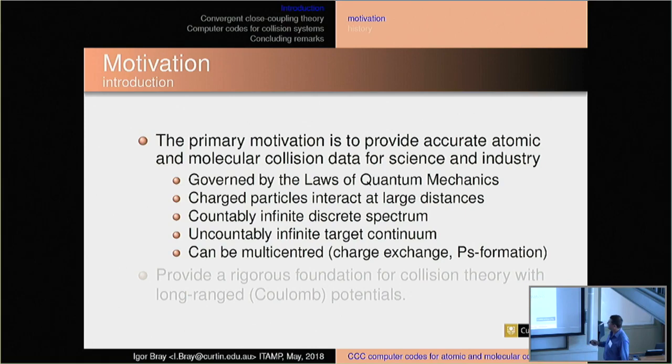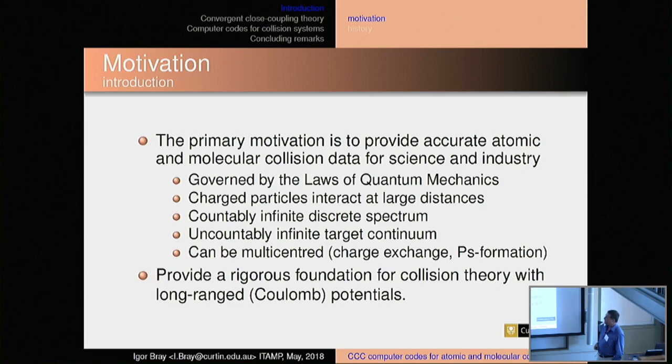It was very clear to me in the 1980s that what we need is to develop a systematic approach to convergence studies in increasing the number of states. It can be a multi-centred charge exchange, positronium formation. We went into heavy particle proton scattering because we solved the positronium formation problem. And having got fully differential ionization right, it took us 10 more years to come up with a rigorous foundation for collision theory with a long-range Coulomb potential, which wasn't even properly formulated. Unfortunately, most of the people who would appreciate that work are no longer with us.